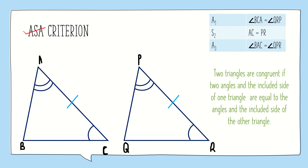If we say that angle A is equal to angle P, angle C is equal to angle R, and BC is equal to QR, then the statement would be wrong — we can't say the two triangles are congruent, as BC and QR are not the included sides between angle A and angle P, and angle C and angle R. Hence it is important that the included side must be mentioned as equal.